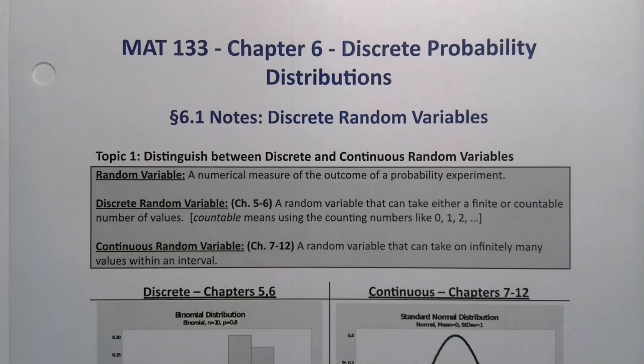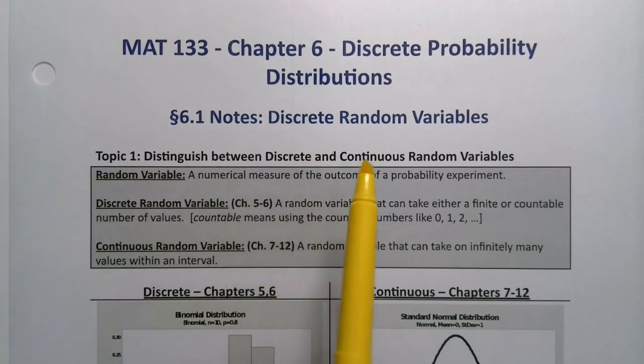In Chapter 6, we want to expand our ideas of probability a little bit further. In particular, we want to look at discrete probability distributions. Now, if the word discrete is ringing a bell in your head, that's because you've seen that before. It's related to discrete data that we learned about back in Chapter 1, Section 1.1, because it's contrasted with continuous data.